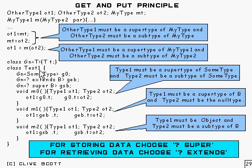Now if we have this class test1 and we instantiate this generic class, or at least we define a type of that generic class. So we say gn of some type, which we call g0, and gn of something which extends b, we call g eb for extends b, and similarly we've got this, which is g super b, supertype there.